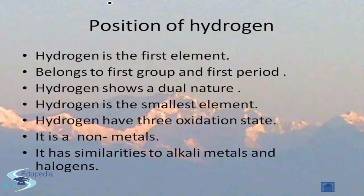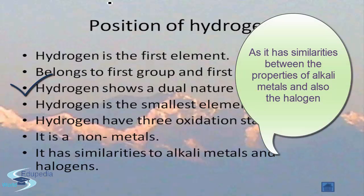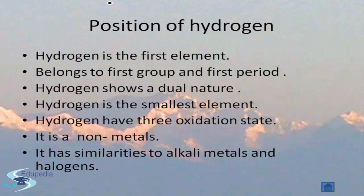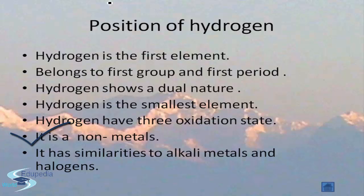To conclude, hydrogen is the first element and belongs to the first group and first period of the modern periodic table. Hydrogen shows a dual nature, having similarities with both alkali metals and halogens. It is also the smallest element among all elements. Hydrogen has three oxidation states: +1, 0, and -1. It is classified as a non-metal, exists in the gaseous state as a diatomic molecule, and has similarities to both alkali metals and halogens.